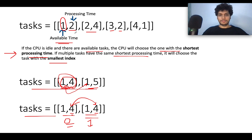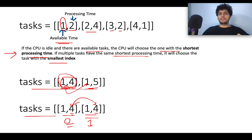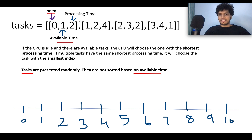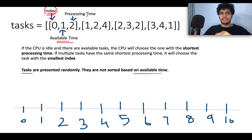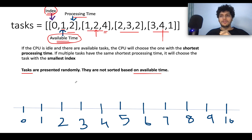In the first step, we sort the entire task array by available time. Since we are sorting, we must track the original index to avoid collision issues later. So each task now has three attributes: the original index, the available time (enqueue time), and the processing time. After sorting by available time, the array looks as shown.